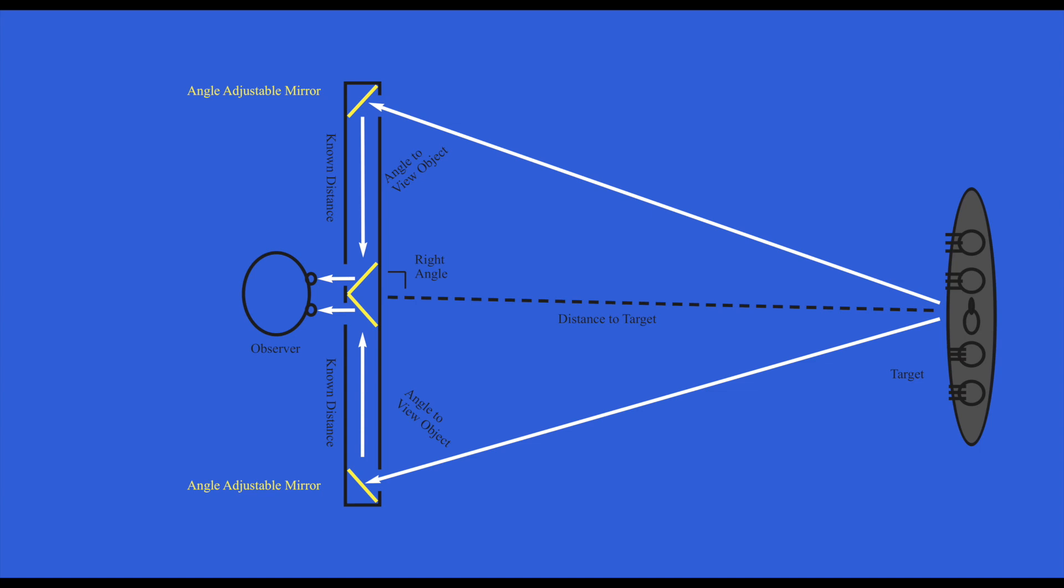Since the length of the tube is known and the angles of the adjusted mirrors are known, two back-to-back right triangles are constructed. Using trigonometry, the common line of the two triangles would be the distance to the object. The mirror adjusting mechanism would then point to the corresponding distance indicated by the angle.